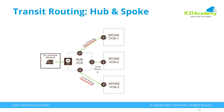For advanced networking, you should know about transit routing, where you have multiple networks on Oracle Cloud that you want to connect with on-premise using a hub and spoke model. There's also local peering, which is connecting different networks within a single region in OCI, and remote peering, which connects your multiple networks across regions.